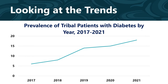Something nice the clinic did was also include a chart of the prevalence of tribal patients with diabetes by year. As you can see, the prevalence of people experiencing diabetes has gradually increased year by year. This affirms for you that you need to take action now. Diabetes is something you'd like to address, and you will include it in your department strategic plan.